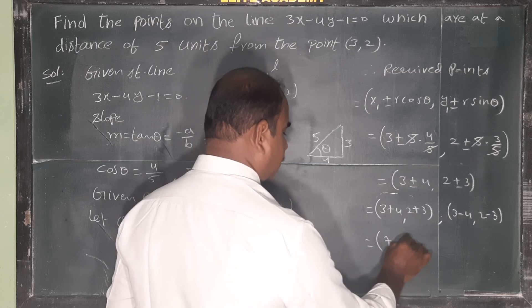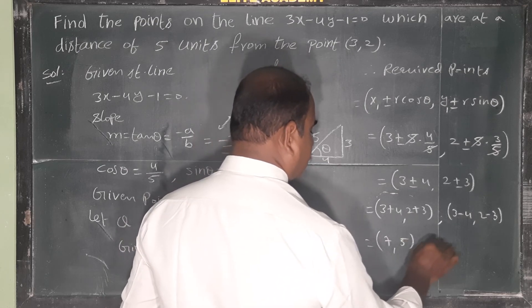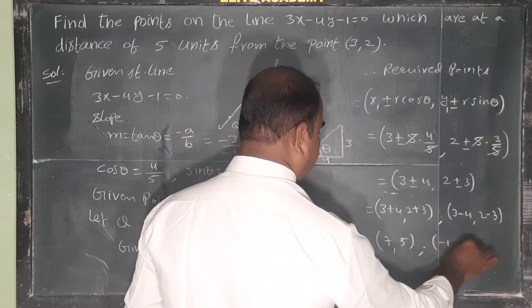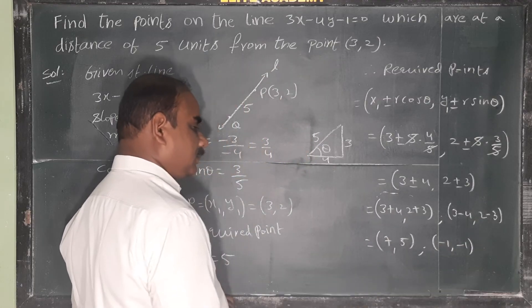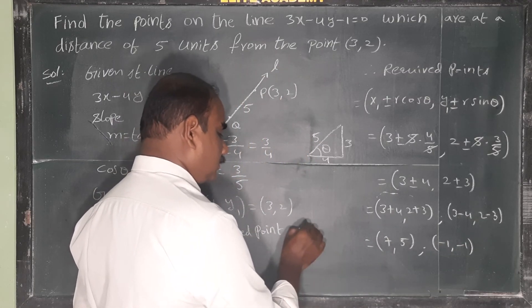So 3 plus 4 means 7, comma 5, comma minus 1, minus 1. Therefore these are the required points.